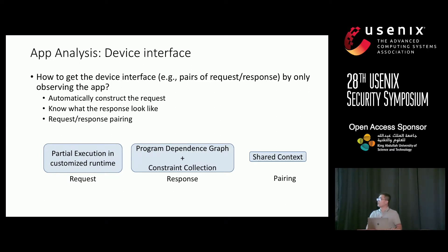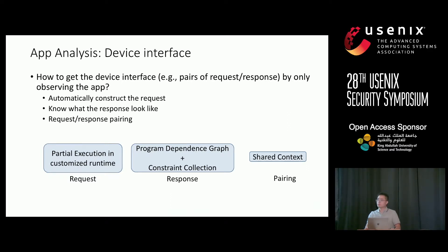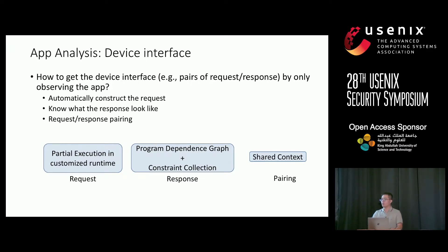We leverage a series of techniques. For request generation, we extract code related to the request and do symbolic execution in a customized runtime environment to trigger request generation. For the response, we rely on the program dependence graph to extract constraints describing the response. For pairing, we check how much data or context is shared between the request and the response.